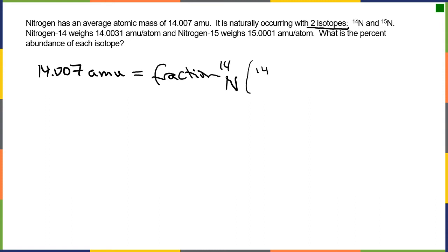So nitrogen-14 multiplied by the mass of nitrogen-14, which is given 14.0031 plus the fraction that is the second isotope. And again, you have to be given how many isotopes you have naturally occurring. And that would be nitrogen-15 multiplied by the mass of nitrogen-15, which is 15.0001 AMUs. Now, what they're asking us is what's the percent abundance of each isotope? Well, we can use what we have, which is the average, to figure that information out. How can we do that?